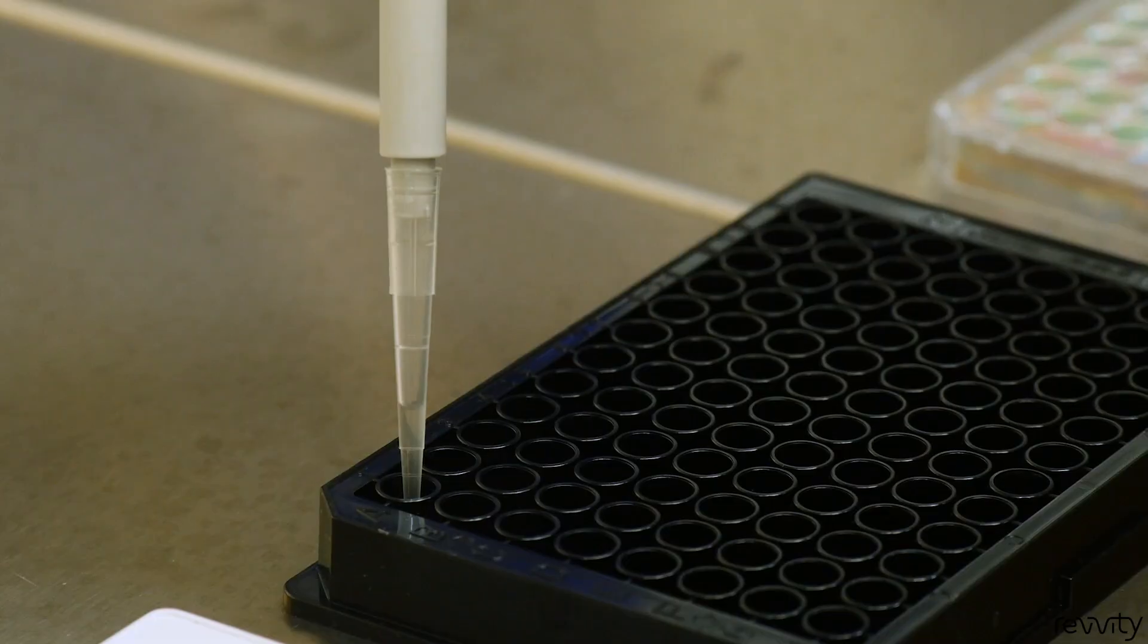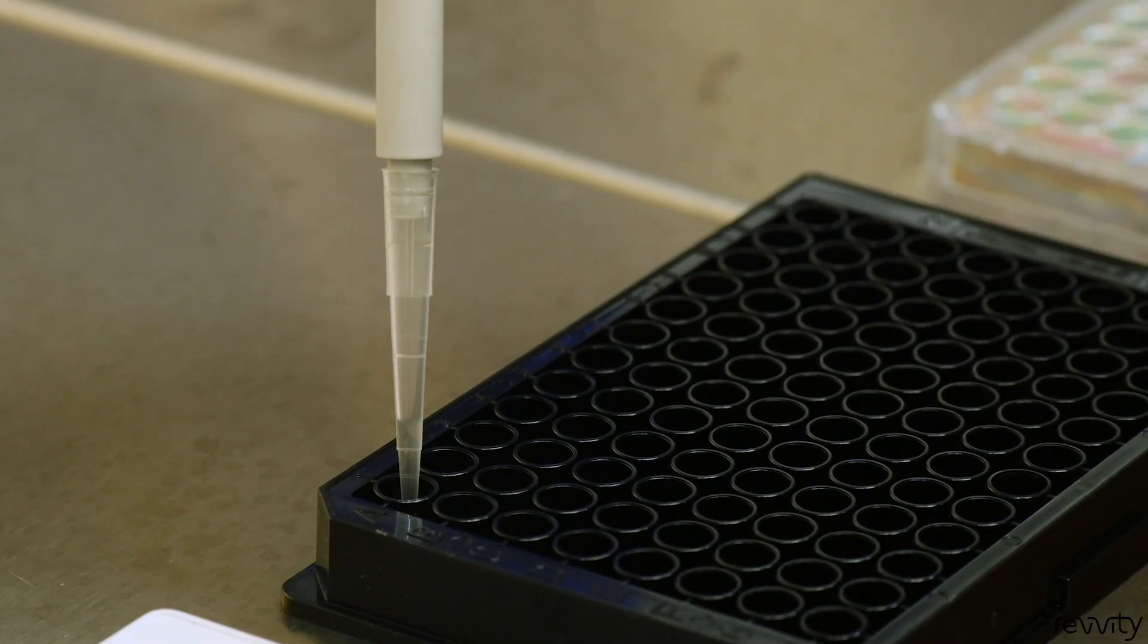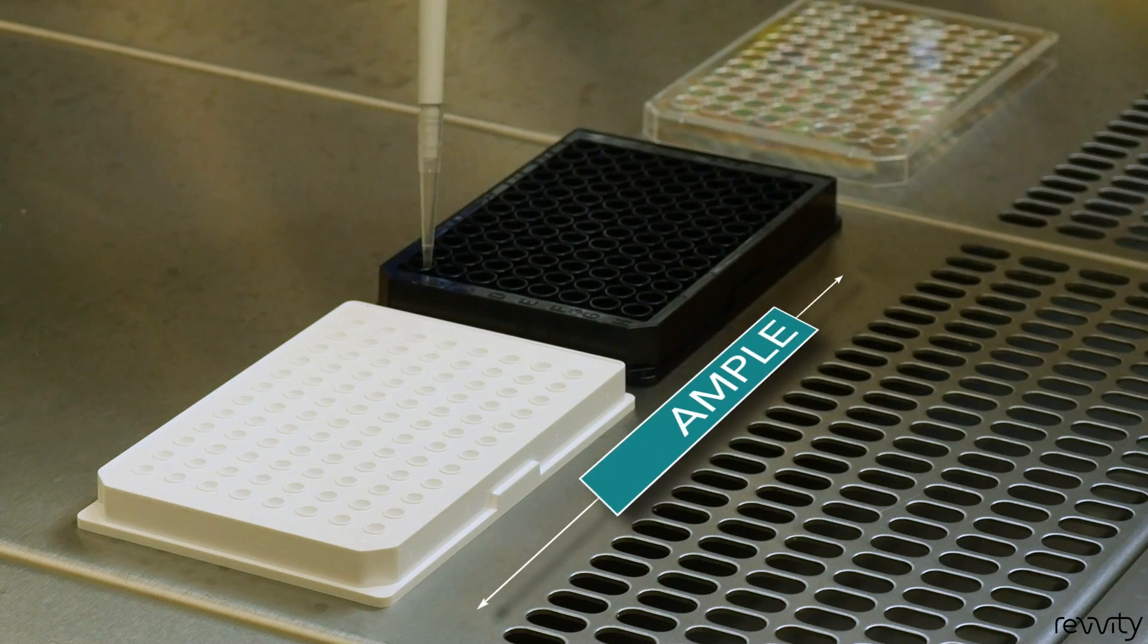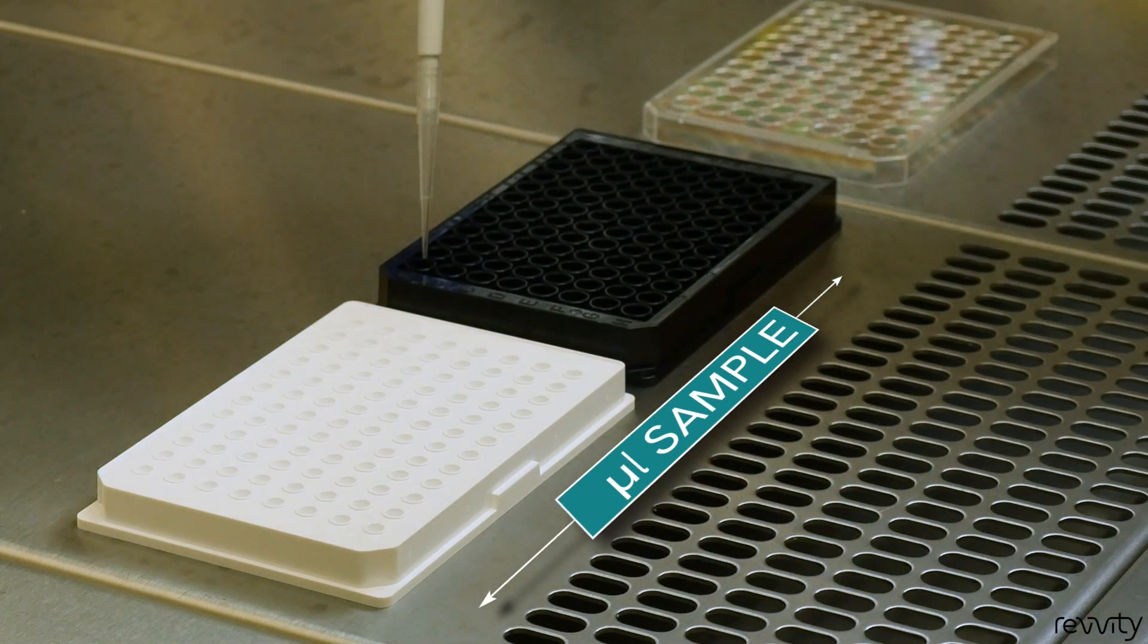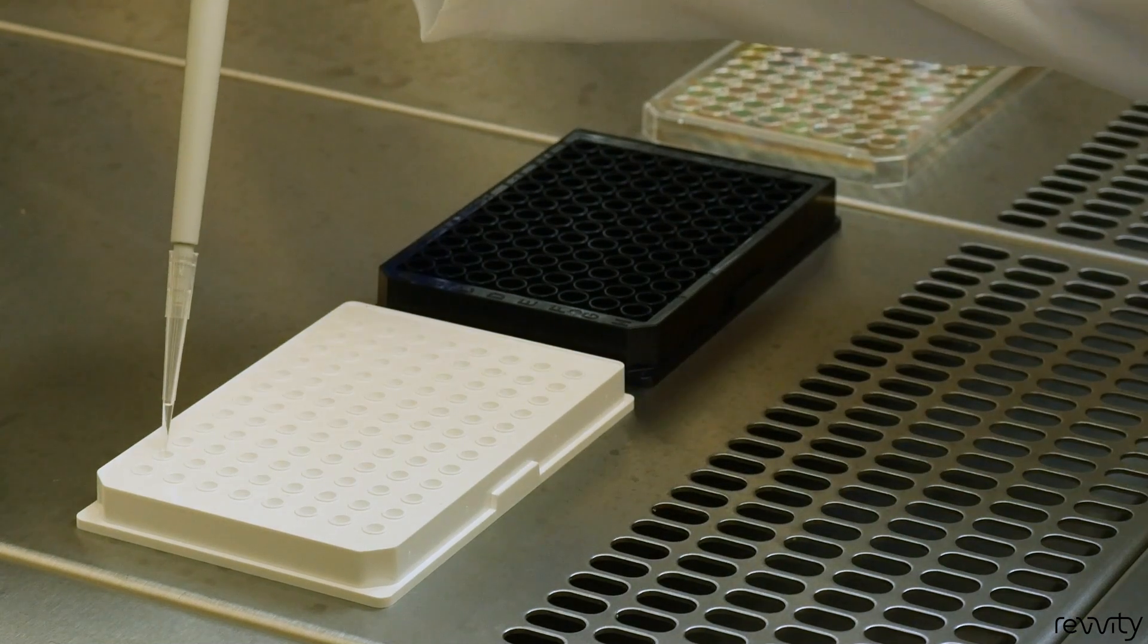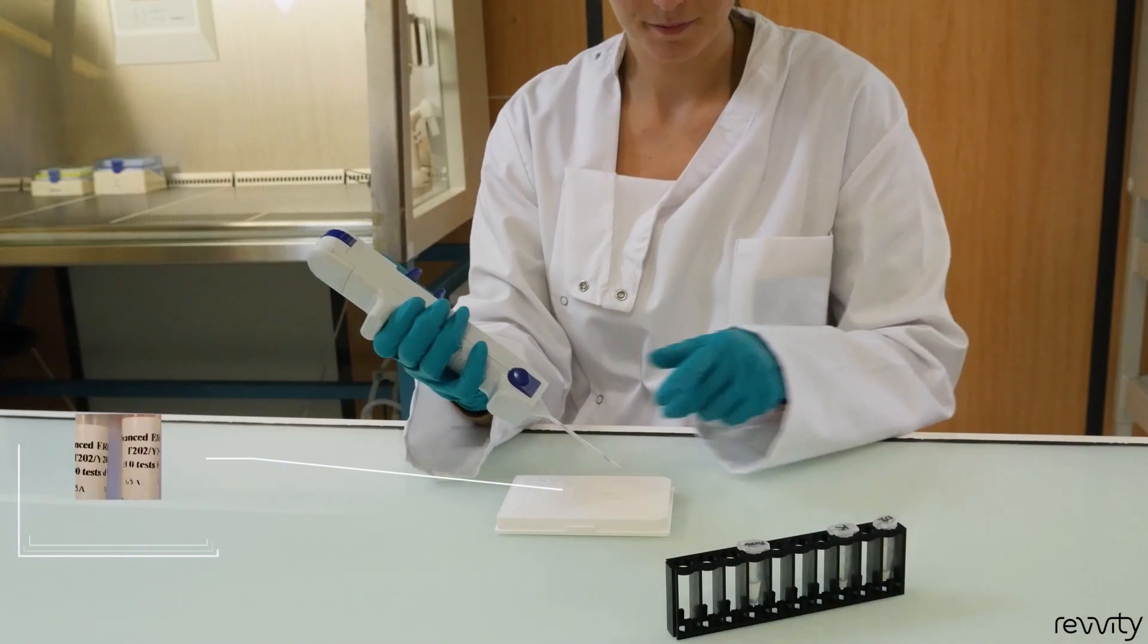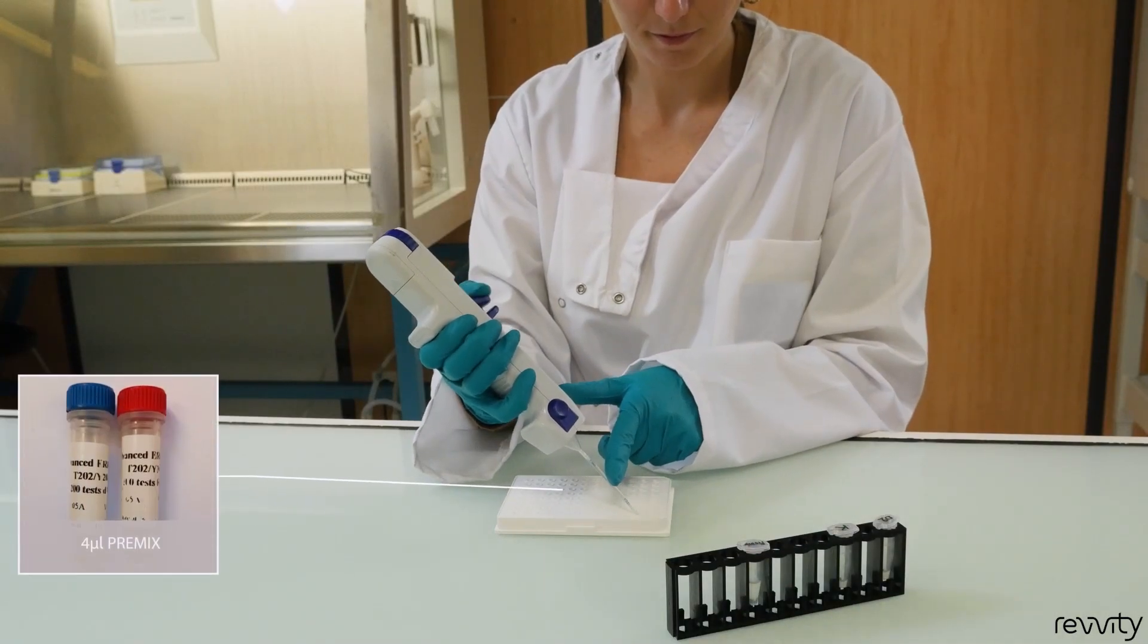After lysis, homogenize your lysates by pipetting up and down. Transfer 16 microliters of the lysate from your culture plate to your HTRF detection plate in duplicate. Add 4 microliters of pre-mix detection antibodies.